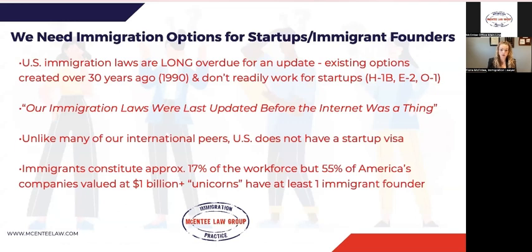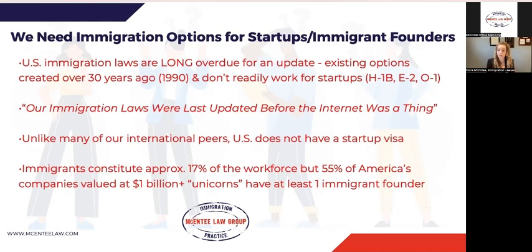Having options for startups is critical to the US as a whole. Our immigration laws that we have right now, that have been passed by Congress, are extremely outdated — we're talking like 30 years old. A lot of our international peers have modernized their immigration system and we're kind of stuck in a 30-year-plus time warp. However, the International Entrepreneur Parole Program is a new option. It's not a law that was passed by Congress — we're still waiting for Congress to pass it. This was passed by executive order through former President Obama.